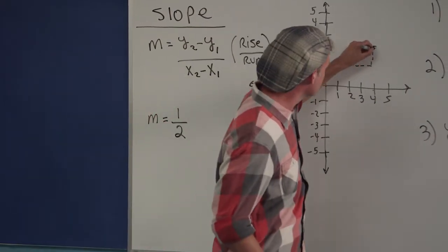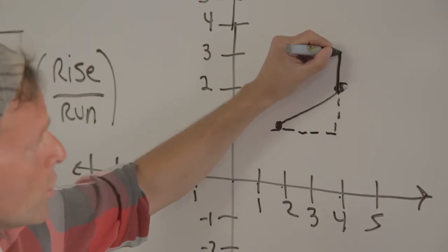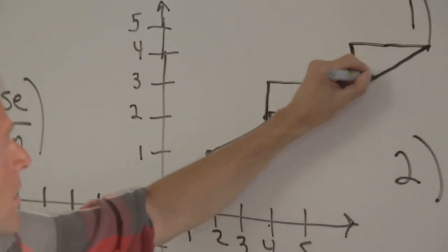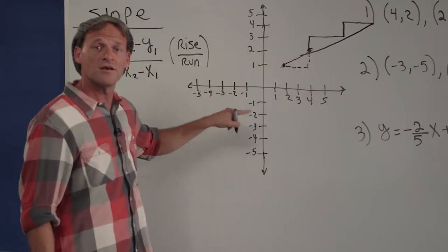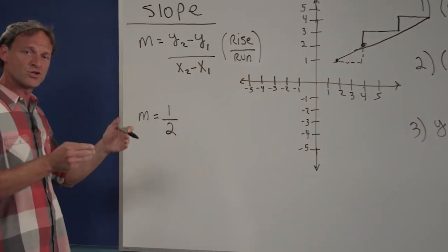If we were to continue this line, we would find every time we go up one, let's say one foot, we would go across two feet. One, one, two. And all of this would connect to this same line here. So this steepness is called one over two, or one half.